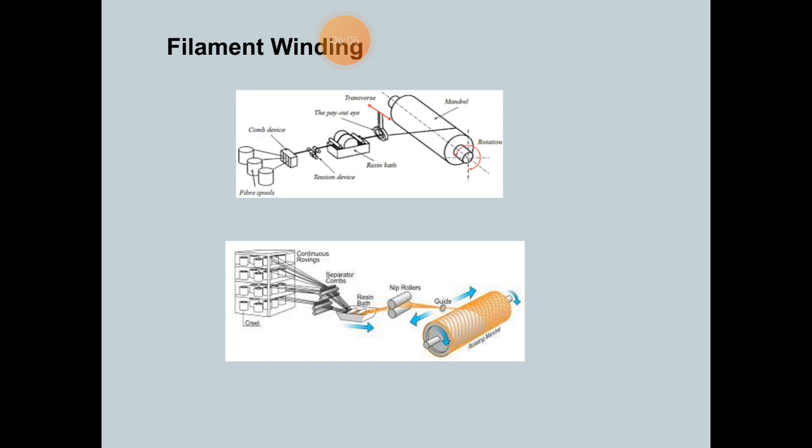The filament winding process is shown in a schematic diagram. In this process, the rotating mandrel on which winding is executed, the tube of resin, and the fiber rolls are all shown in the figure.